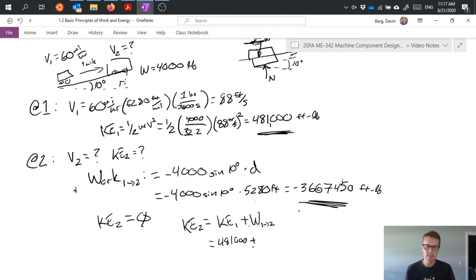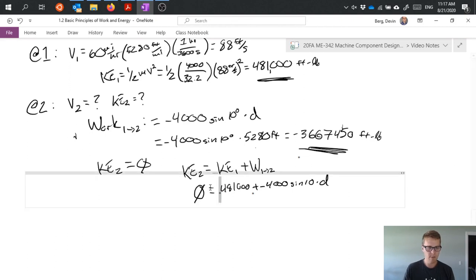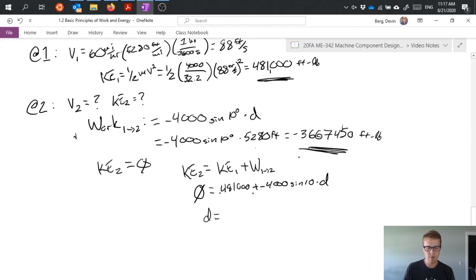Now, we need to redefine this, because previously, we substituted in d of one mile, but we've learned that that's not true. d never gets to one mile. So, instead, we have our same equation, minus 4000 sine 10 times d, where d is our unknown because we can substitute in zero for kinetic energy two. So, if I go ahead and solve this equation for d, I get 692 and a half feet, which is equal to approximately 0.13 miles.